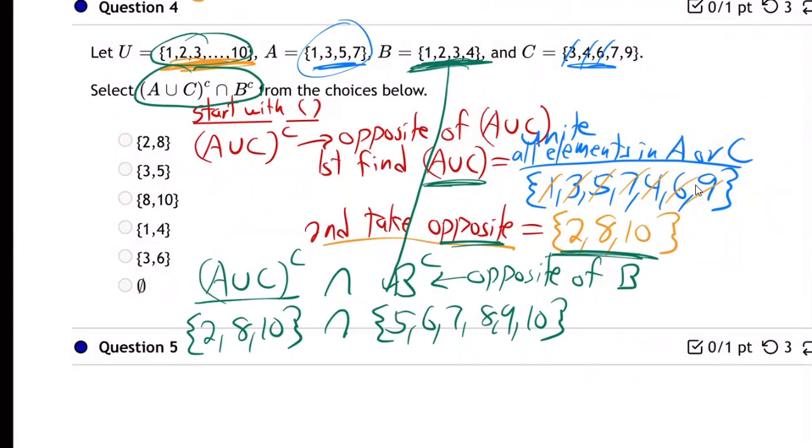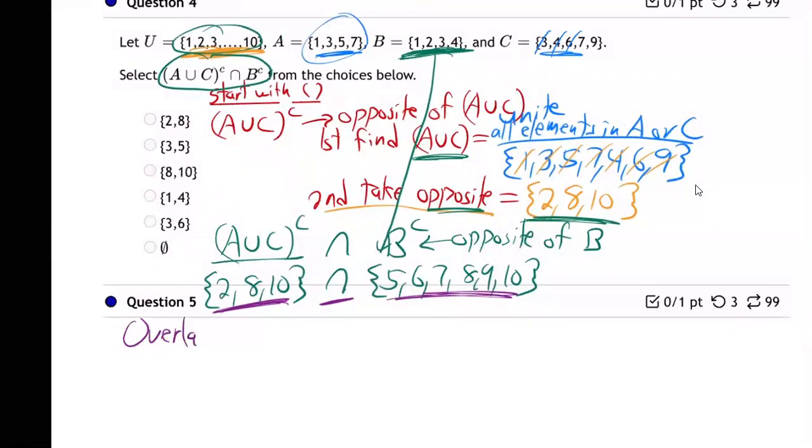So now, here in the end, we're supposed to take this, overlap that. So this is the overlap, all elements in common. It's the overlap. It's all elements in common to both sets.